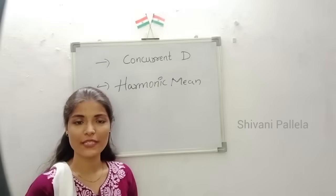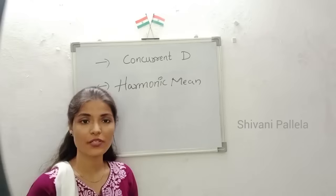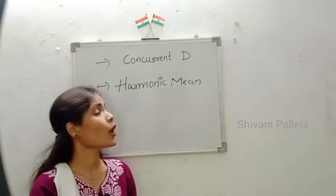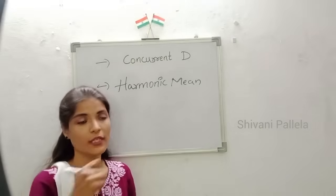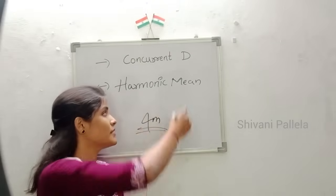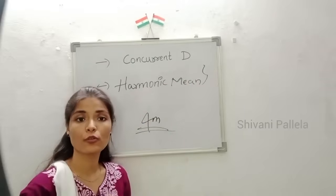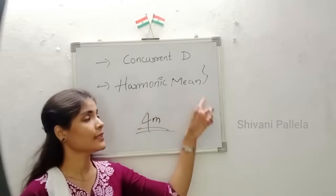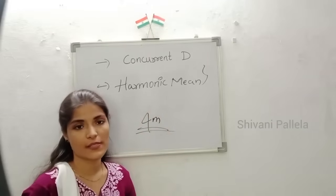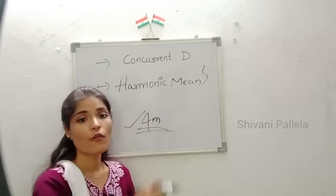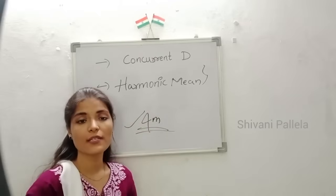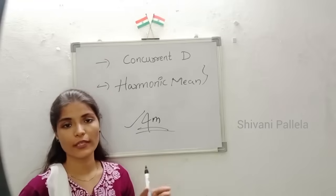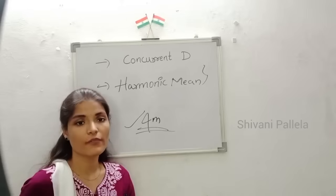Hello all, welcome back to our channel. In this video we are going to discuss problematic questions which will definitely come in business statistics examination in Part A — that is concurrent deviation and harmonic mean. One or two methods they may ask in Part A, and in this video we will calculate how to find concurrent deviation and harmonic mean. You can easily score four marks in Part A. This is an important class for semester three students.